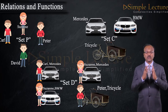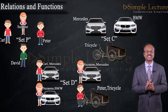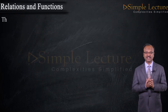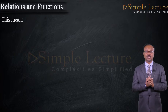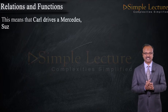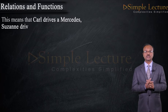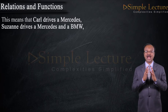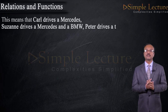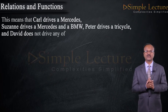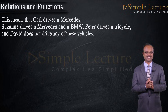When you observe set D and the ordered pairs given, it means that Carl drives a Mercedes, Susan drives a Mercedes and a BMW, Peter drives a tricycle, and David does not drive any of these vehicles.